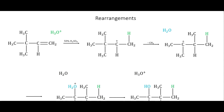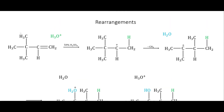Just like with SN1 and E1 eliminations, we are forming a carbocation here. We pull off that hydrogen, the electrons go onto the oxygen, and we end up with a carbocation on a secondary carbon. Next to it we have a quaternary carbon, so the carbocation can actually move over so that we put it on what is now a tertiary carbon — by moving one of those methyl groups over to that secondary carbon.